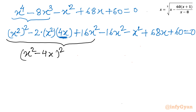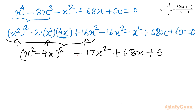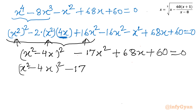Checking: a² is (x²)² = x⁴, b² is 16x², and minus 2ab gives minus 8x³ — all three terms are present. Now collecting the remaining terms: minus 16 minus 1 gives minus 17, so we have (x² minus 4x)² minus 17(x² minus 4x) plus 60 equals 0.